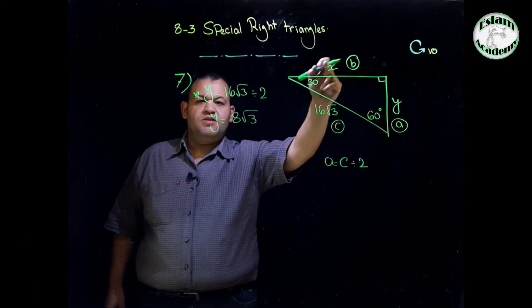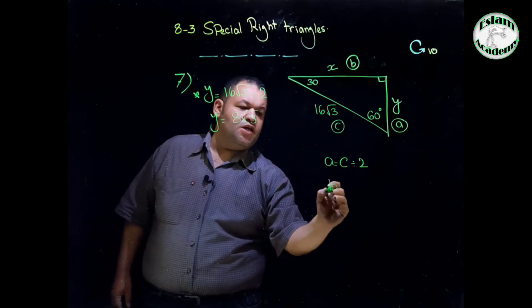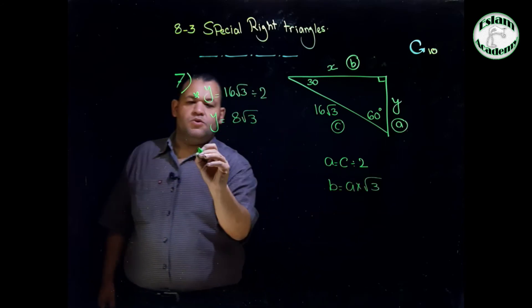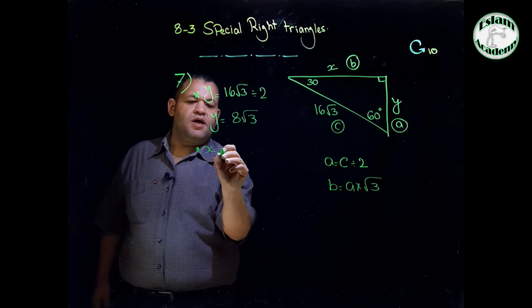Now we need to find X. X is B. So B equals A times root 3. We can say that X equals A.